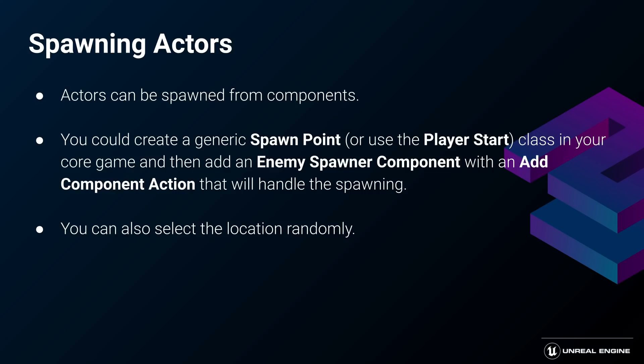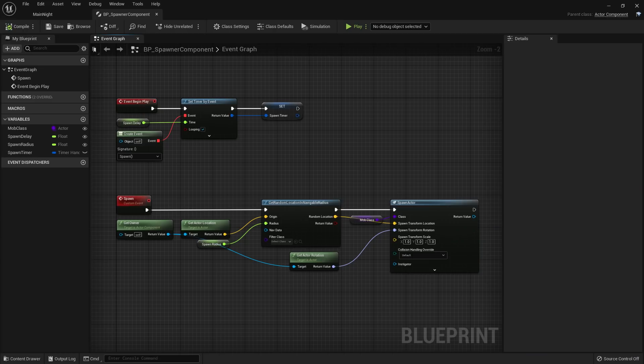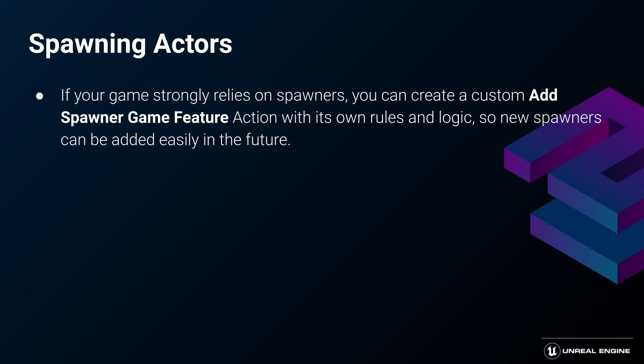If you'd like to spawn something without the need of loading a level instance, you can do that in a lot of different ways — the system is very flexible. You can for example create a spawner component and have the game feature add it to an actor that is already on the level, and have the component select the spot on which to spawn the new actor. The place can be selected randomly or calculated in a more controlled way, or you could create a new game feature action where you define the spawning behavior.